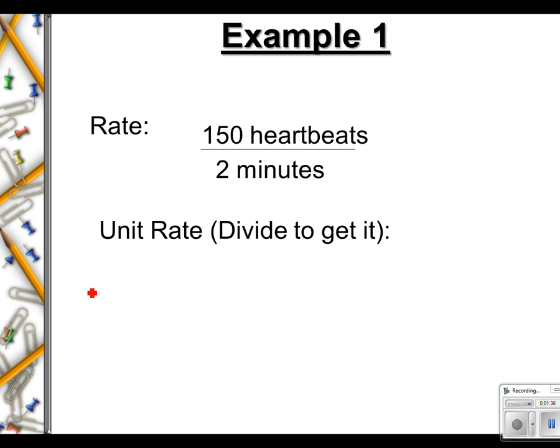Okay, example one. Your heart beats 150 times in two minutes. Divide to figure this out. Now, one of the rules of thumb, here's my thumb right here. The rules of thumb for when you're figuring out these problems is whatever you're looking for the unit rate for, whatever that is, you want that in the denominator. That's the number you're dividing by.